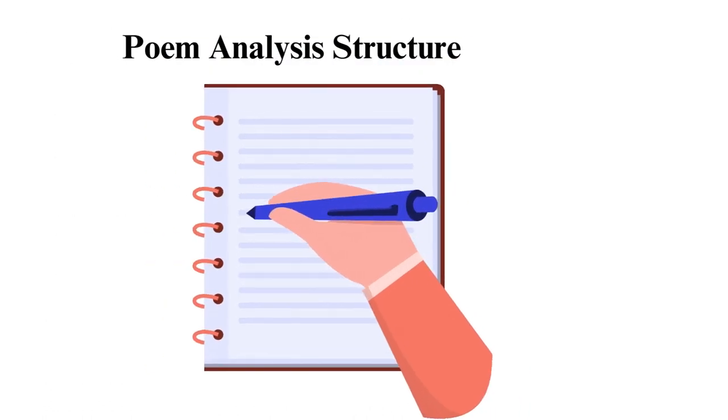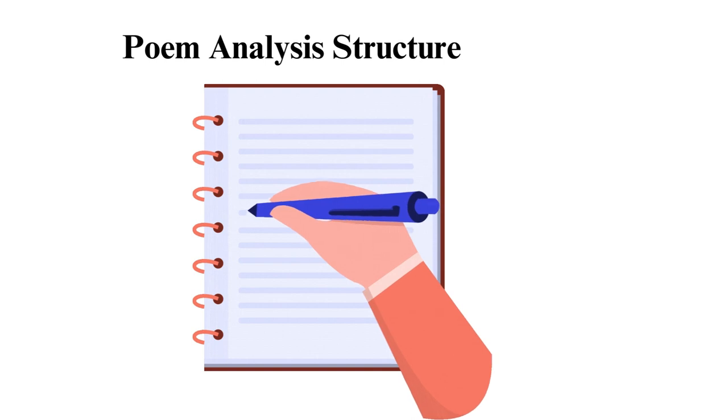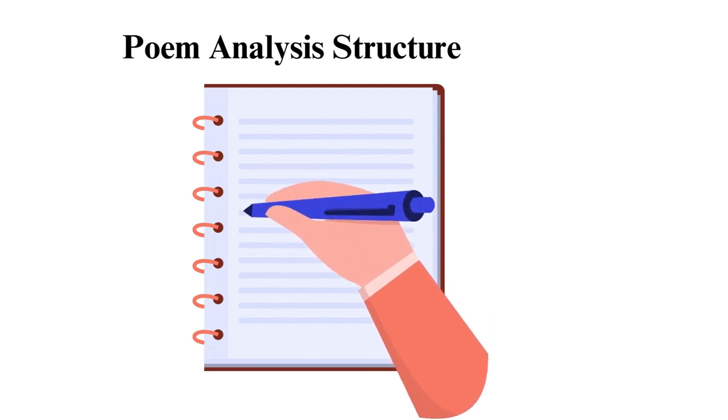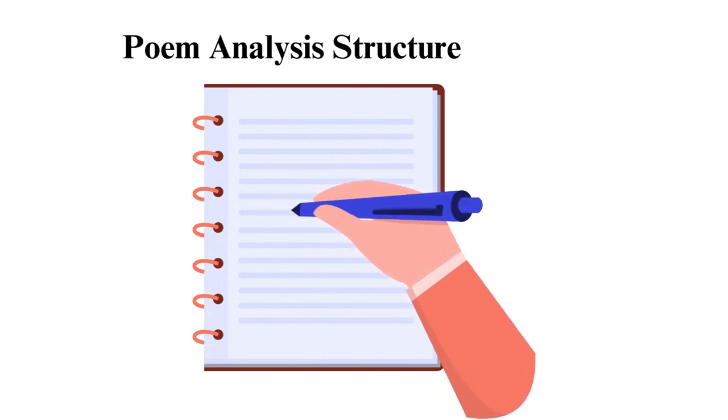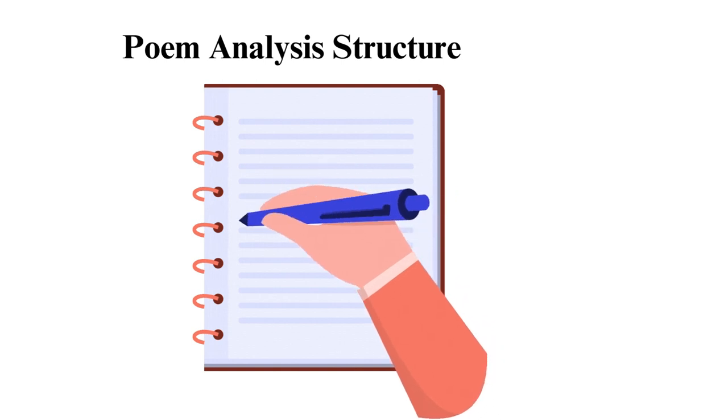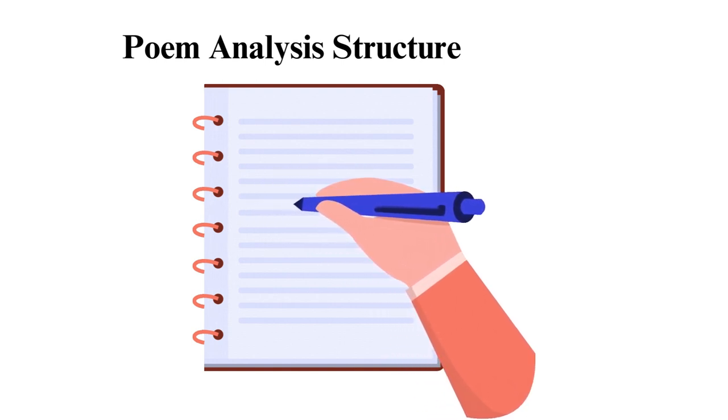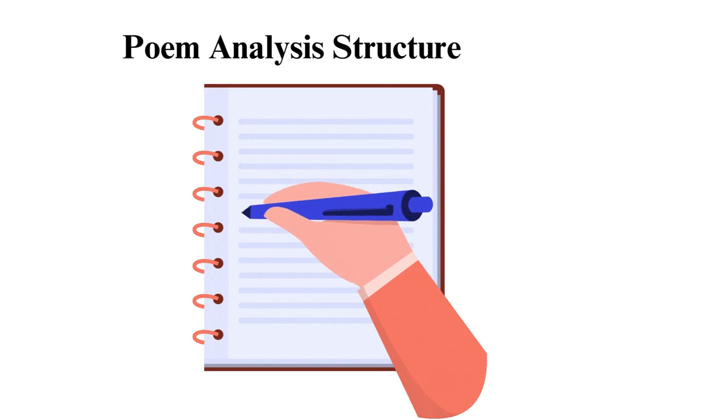Poem Analysis Structure. 1. Introduction. In this section, you will begin by introducing the poem, the poet, and the background details, such as when it was published, before proceeding to form the rest of your analytical essay outline. You may also offer a brief summary explaining what the poem is about before you proceed.